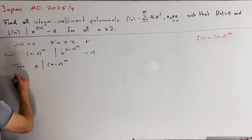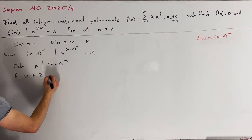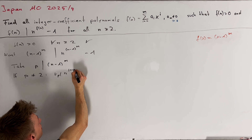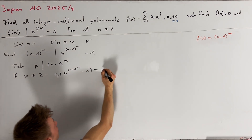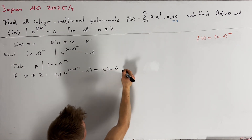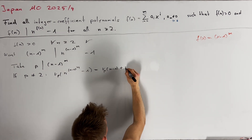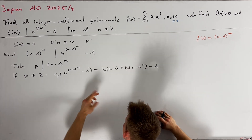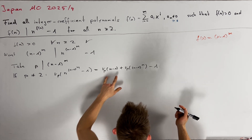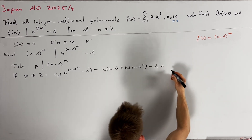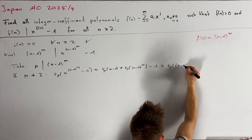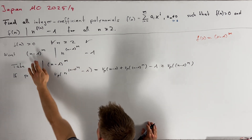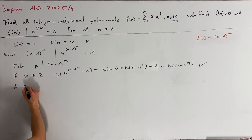For the case p not equal to 2, the LTE lemma gives us ν_p(n^((n-1)^m - 1)) equals ν_p(n-1) plus ν_p((n-1)^m - 1). Since p divides n minus 1, the first term is at least 1. Therefore, this is greater than or equal to ν_p((n-1)^m), and hence p divides the right-hand side at least as many times as the left-hand side.